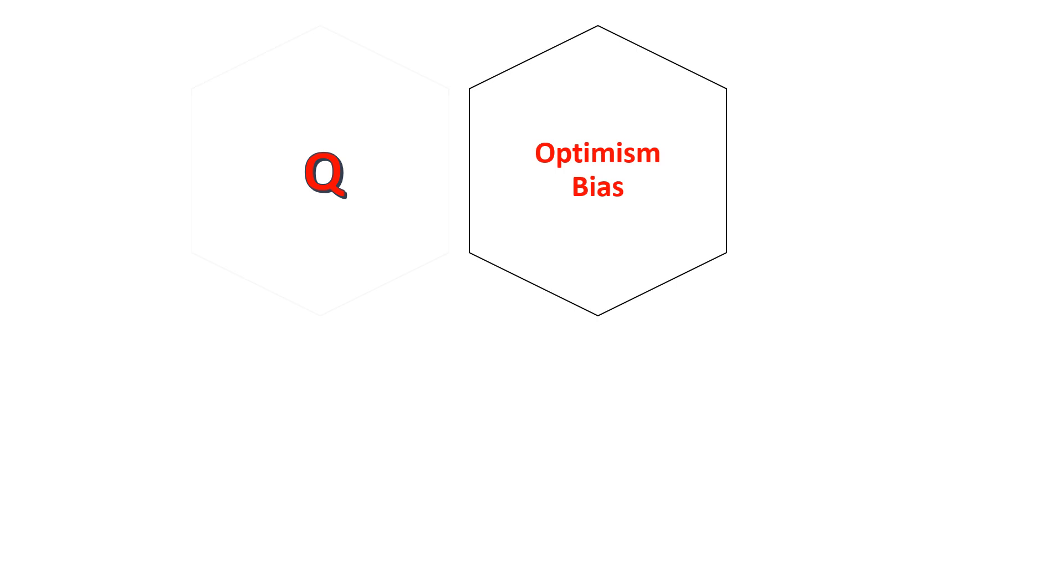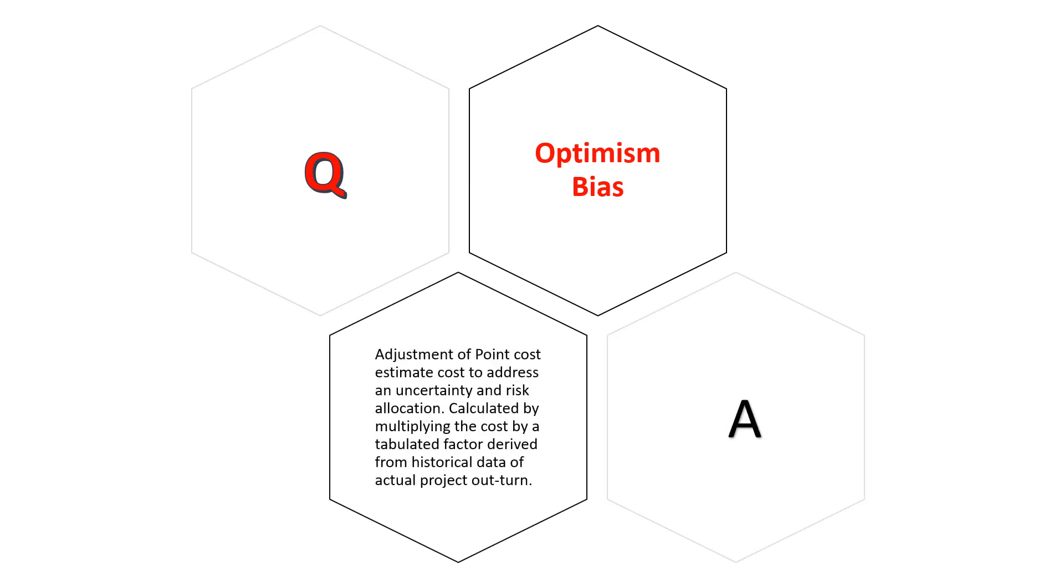Optimism bias: Adjustment of point cost estimate to address uncertainty and risk allocation. Calculated by multiplying the cost by a tabulated factor derived from historical data of actual project outturn.